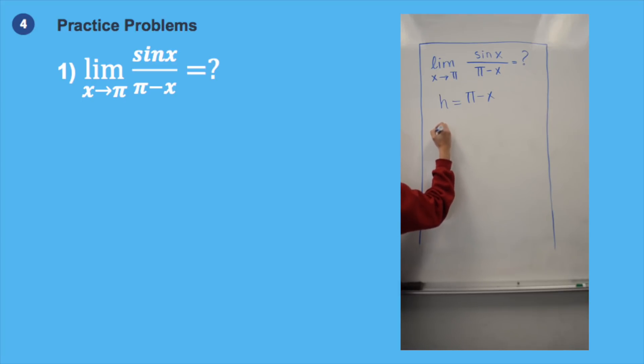Now, when we rearrange the equation according to the substitution, we get the limit of h going to 0 of sin of p minus h over h. Now we know that sin of p minus h is equal to sin of h, so this just gives us the ratio of the coefficients of h. So the answer of this limit is 1.